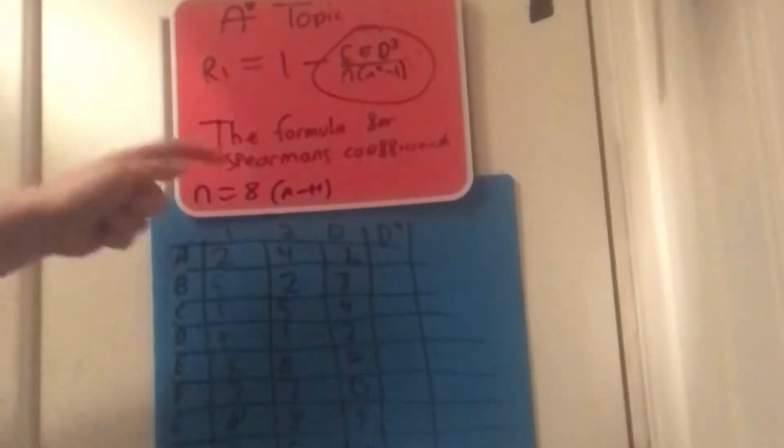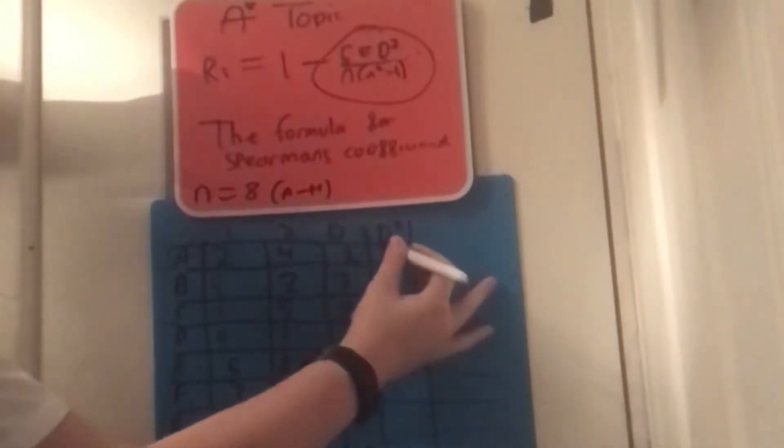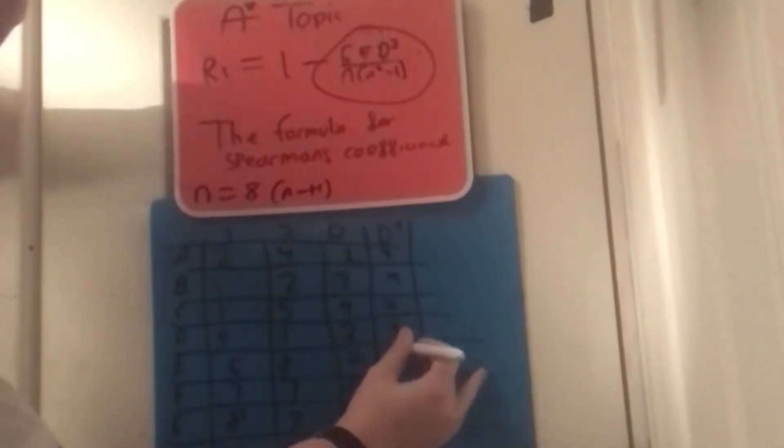Now what we're doing is we're taking our answer we just got, and then it's squared. So 2 squared is 4, 3 squared is 9, 4 squared is 16, 3 squared is 9, 4, 0, 25, and 9. Right.